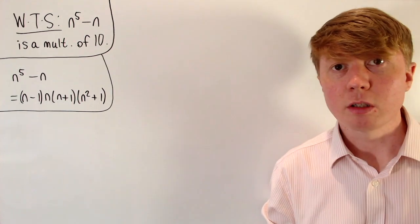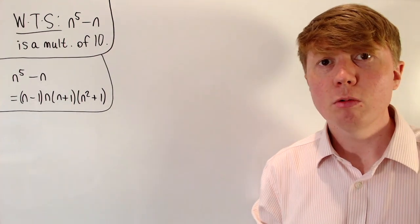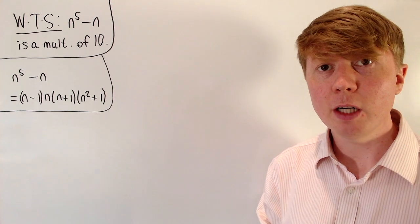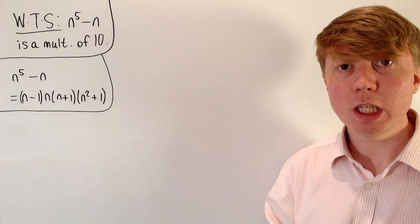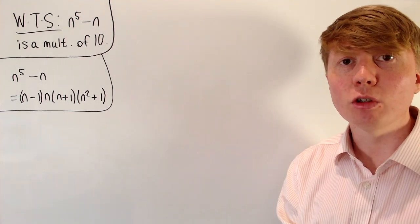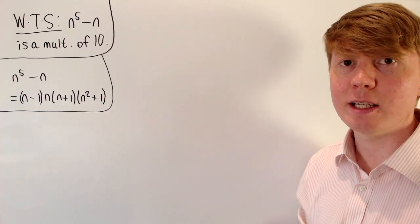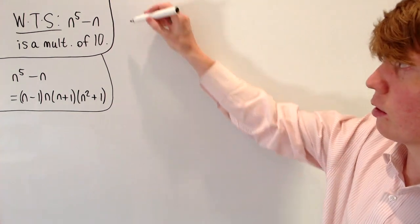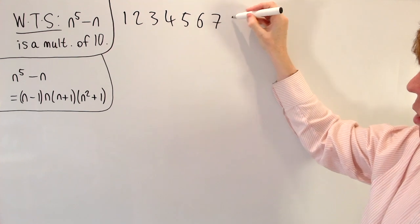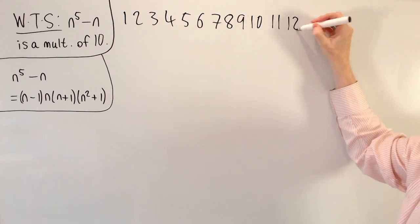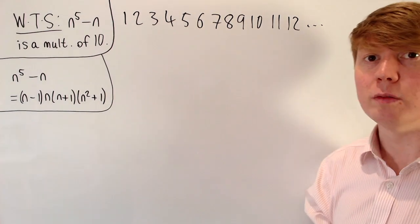So how do we know that this is going to be a multiple of 2? Well, we're going to take advantage of the fact that in the factorization, we've got n minus 1, n, and n plus 1. So three consecutive integers, which are all factors of n to the 5 minus n. So if you imagine just picking three consecutive integers, you can immediately see that there's no way of doing this without having at least one of them as an even number or a multiple of 2.